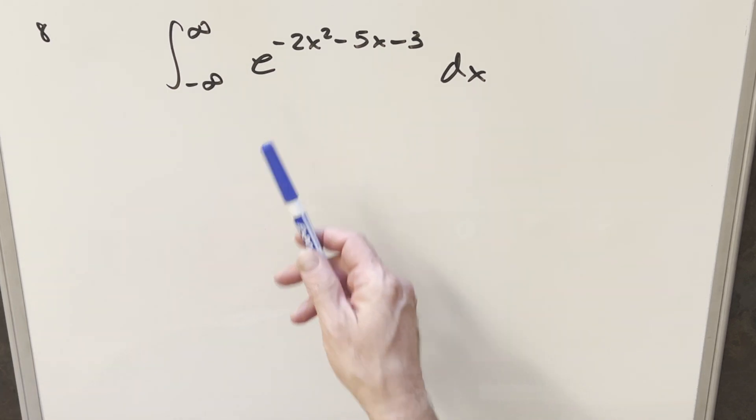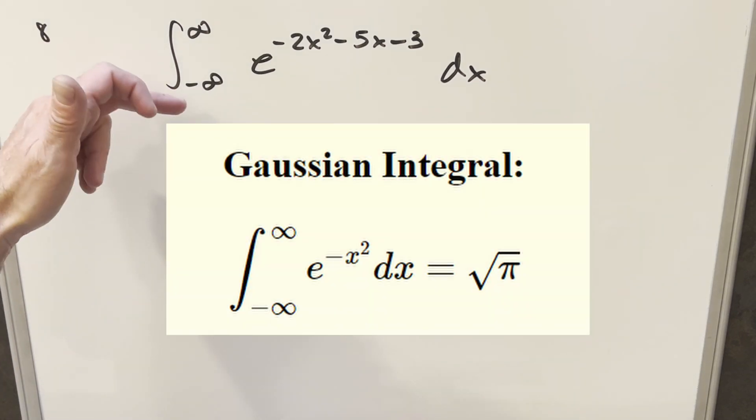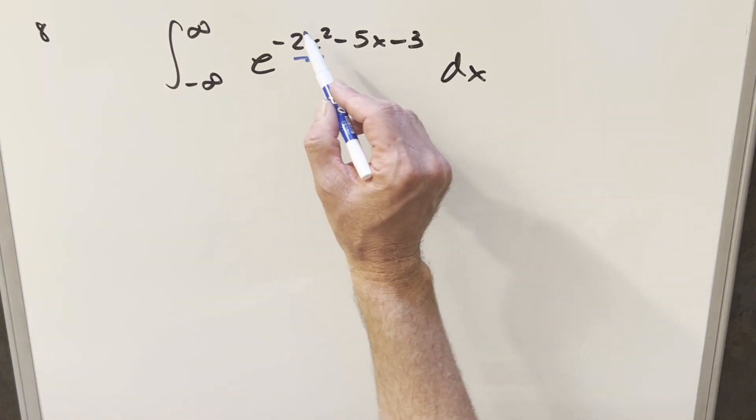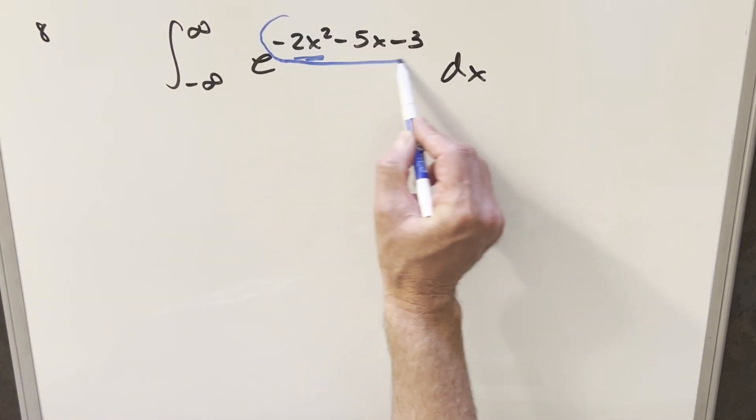The first thing I want to notice is just the similarity to the Gaussian integral. We have the correct bounds, we're going minus infinity to infinity, also having something squared here in the numerator with the negative sign. The only thing is we really need to clean up this exponent because it's not going to quite work this way.